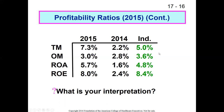Many hospitals today have situations where the operating margin isn't as good as it ought to be, but the total margin is being buoyed by investment returns. As mentioned in the last lecture, we've had a bull market for going on a decade. If you have an organization with a large endowment, those investments are doing well and making the organization look probably healthier than it actually is. Total margin and operating margin come strictly from the income statement, whereas ROA and ROE combine the income statement and balance sheet.